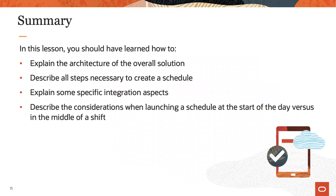In summary, in this lesson we learned about the overall architecture and how production scheduling and the execution system interact, the end-to-end process and the steps required to create a schedule, specific integration aspects and how they are considered in production scheduling, and considerations around execution data accuracy and its relevance for schedule refresh timing.